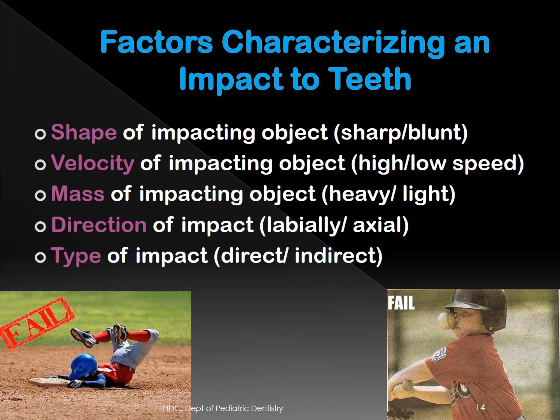Factors characterizing impact on teeth include shape, velocity, mass, direction, and type of impact — these influence what kind of injury the child will have. Depending on whether the force is absorbed by the crown, root, alveolar process, or distributed equally, different manifestations occur: crown fracture, root fracture, crown and root fracture, crown fracture with subluxation, and so on.